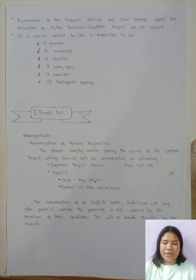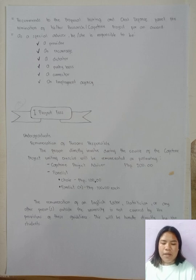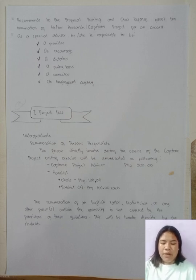Remuneration of Persons Responsible (Undergraduate): Persons directly involved during the course of the Capstone Project writing exercise will be remunerated as follows: Capstone Project Advisor — 200 Pesos; Panel Chair — 100 Pesos; Panelist 1 — 100 Pesos; Panelist 2 — 100 Pesos. The remuneration of an English editor, statistician, or any other persons outside the university is not covered by these guidelines and will be handled directly by the students.